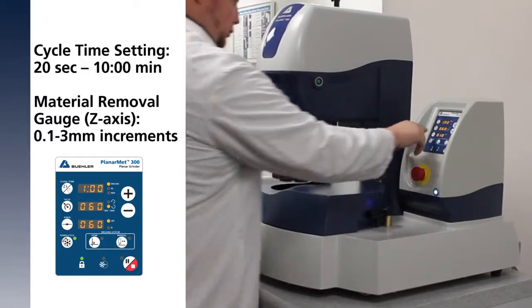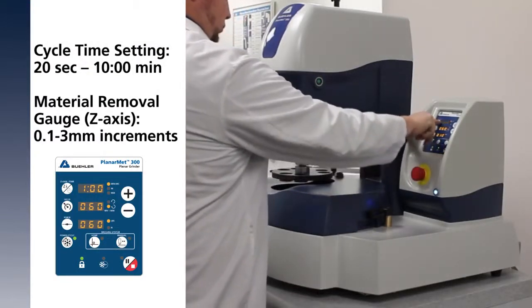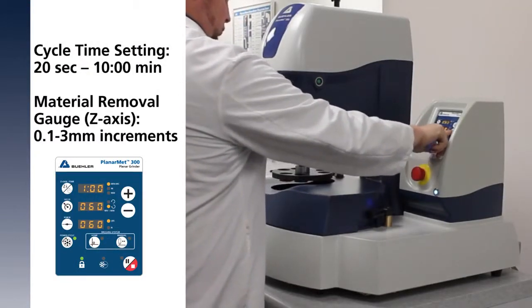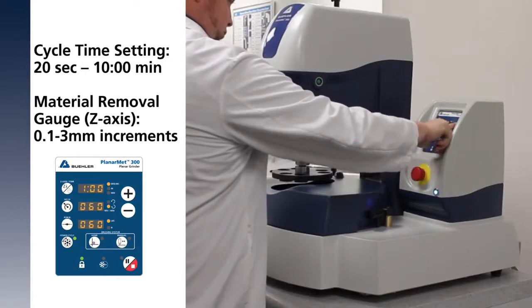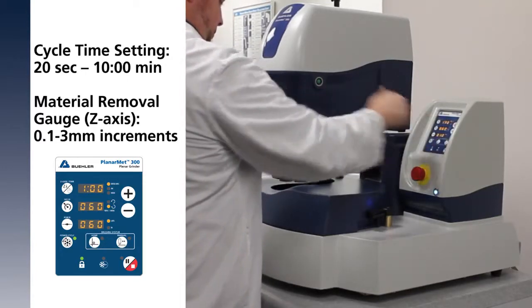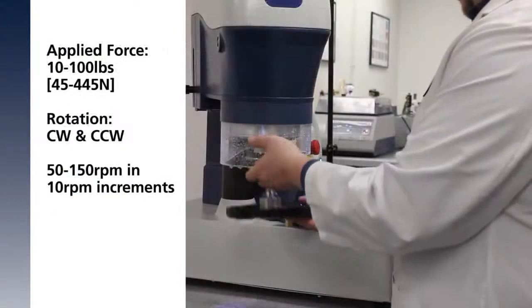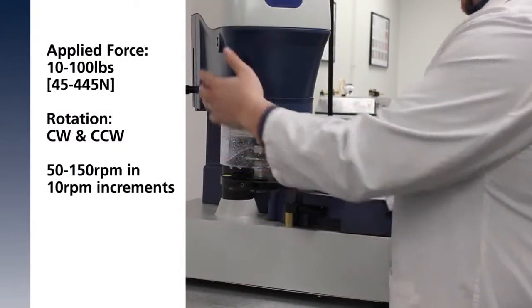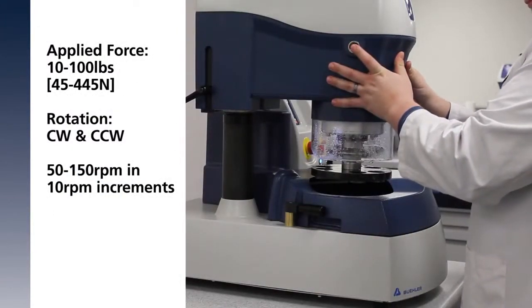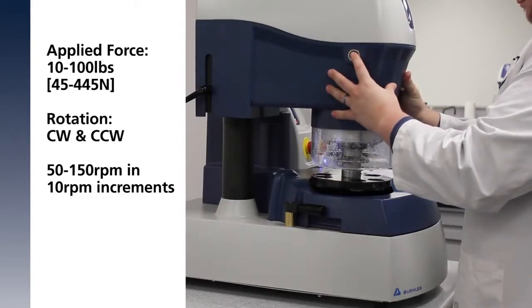Select your preferred grinding mode on the control panel, quickly choosing between a timed cycle or the Z-axis mode for controlled material removal. Load your specimen holder, select an operating mode, and the specimens are full-plained in one to two minutes.